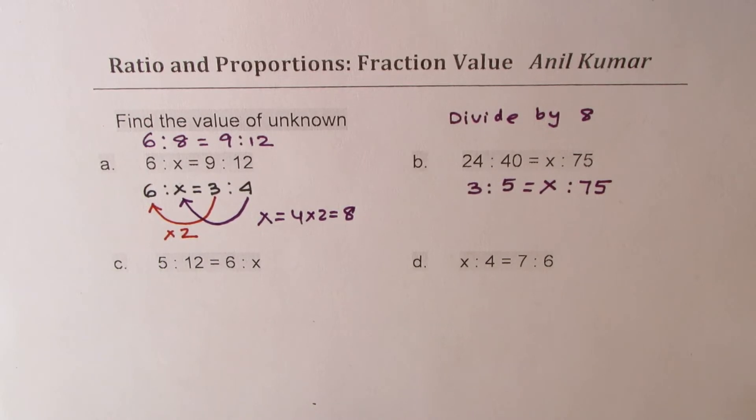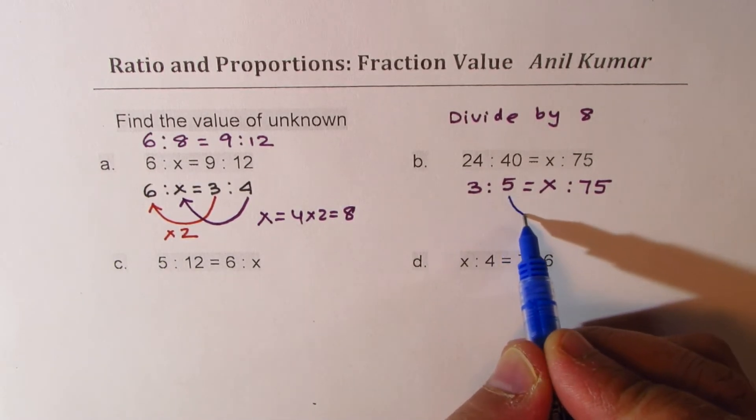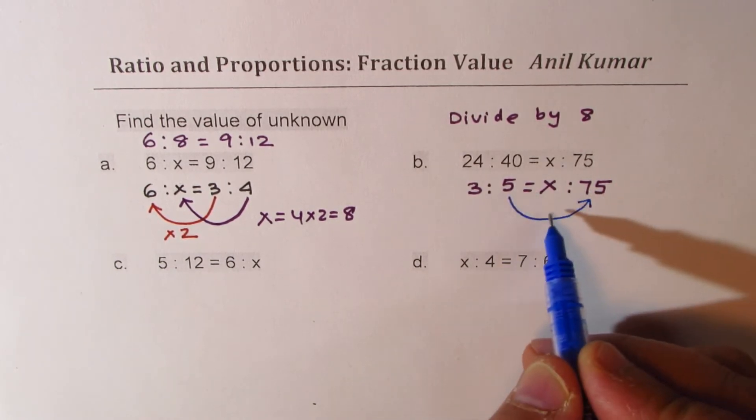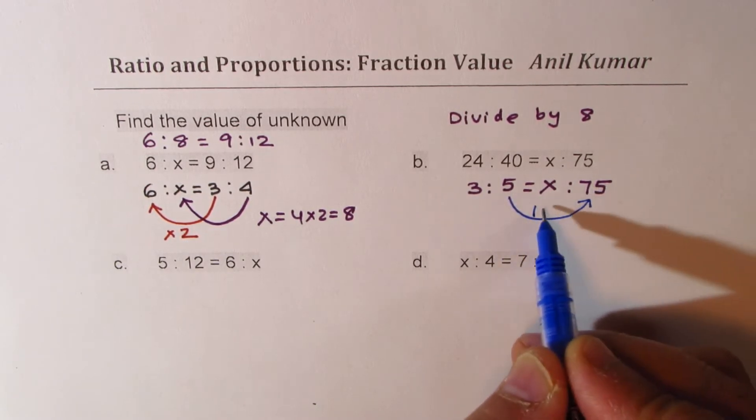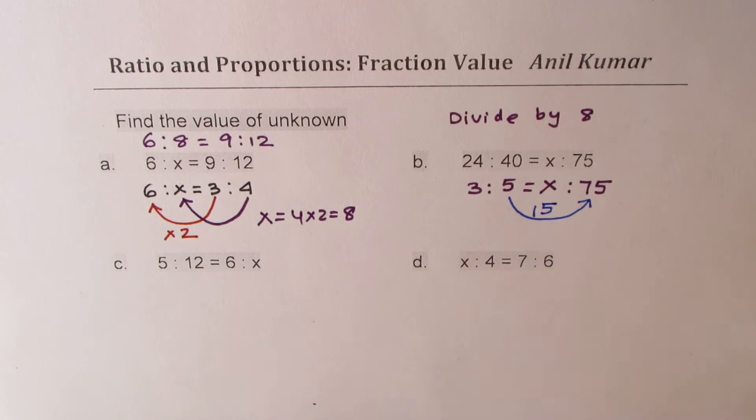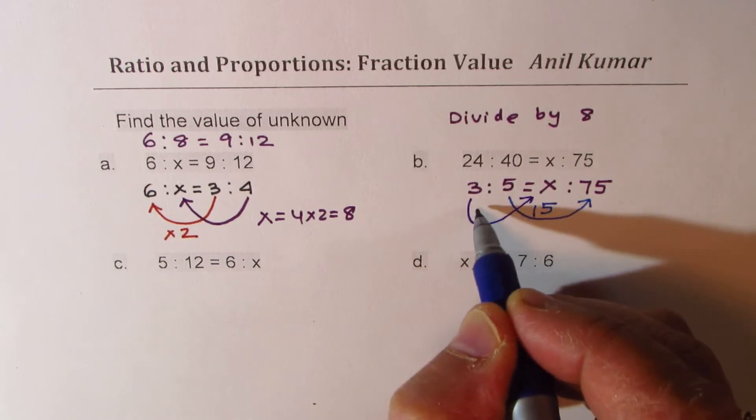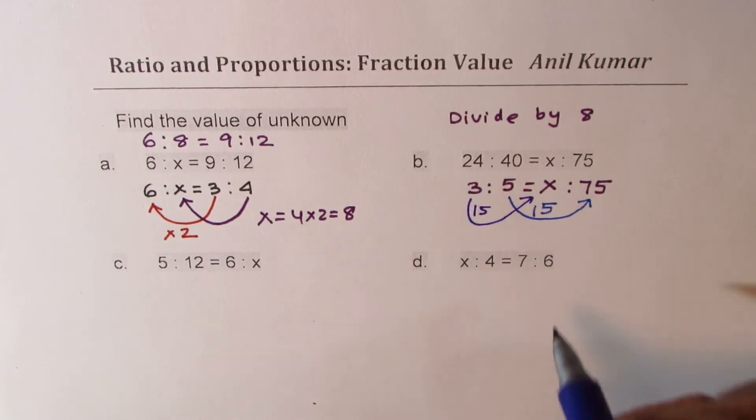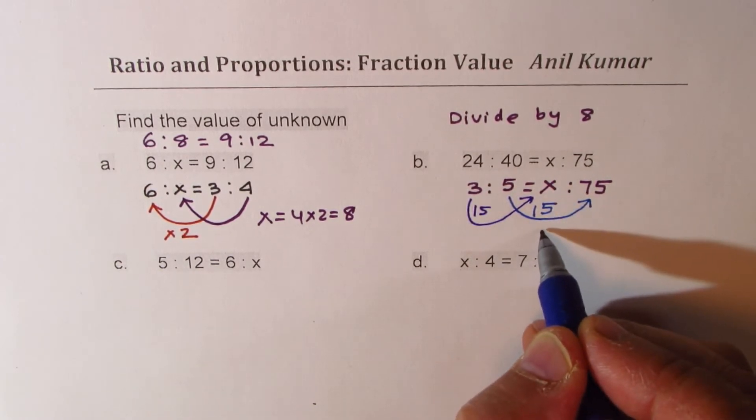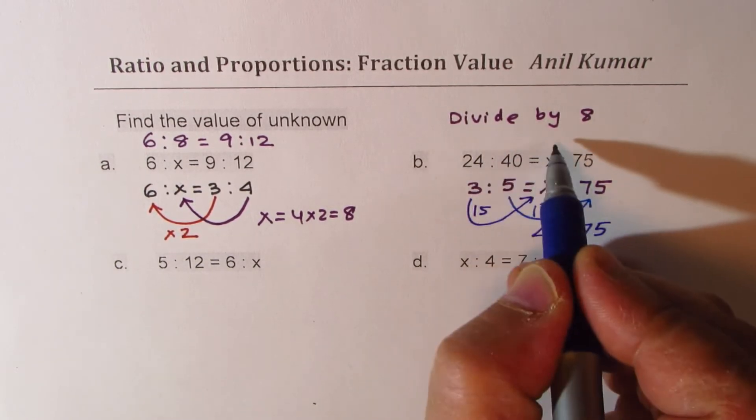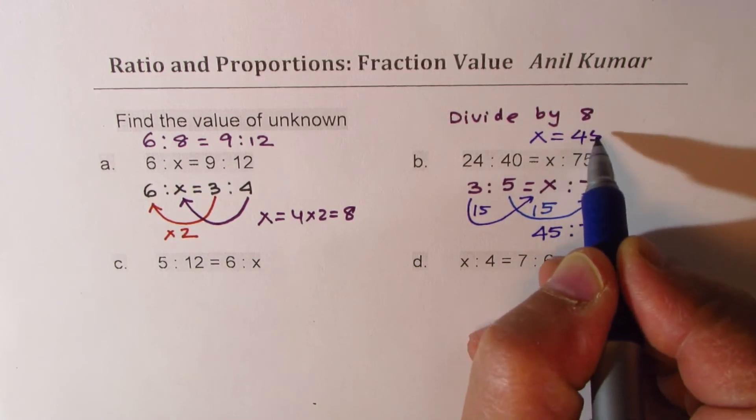Now again it is simpler. Simpler because I know that I could multiply 5 by a number and get 75. And that number is 15. So 15 times 5 gives me the result. And therefore I could also find the value of x by multiplying 3 by 15. So if I times this by 15 also I get my value and that is 45. So I could write this as 45 to 75. So I get x equals to 45.